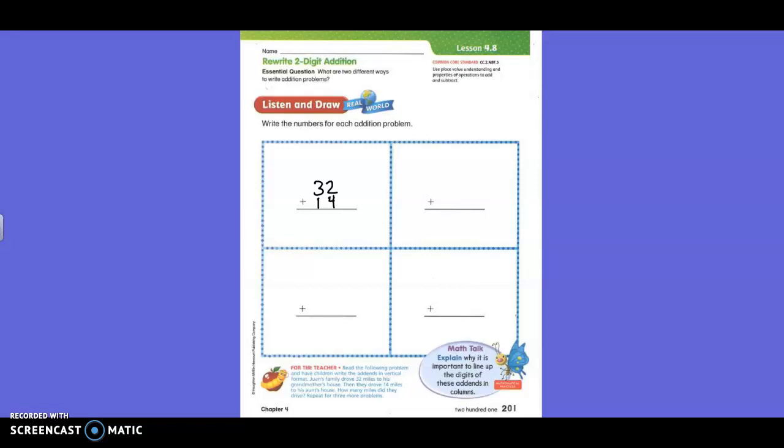Now, what do I do? Landon? Add the ones. Add the ones. Right here is the ones. Two plus four. What is that? Lena? Six. Six. And then what do I do, Kaysen? Add the tens place. Three plus one. What is that? Matthias? Four. So how many miles did they drive? Forty-six. Forty-six miles. Put your label on there. Forty-six miles.